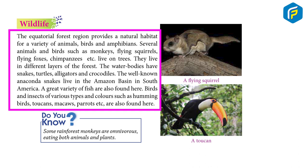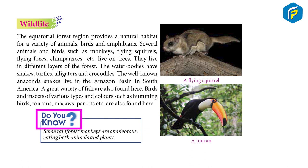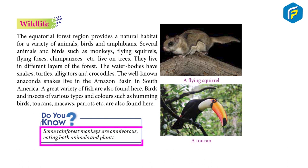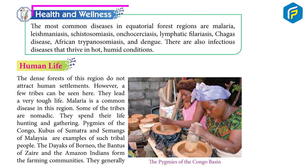Birds and insects of various types and colors such as hummingbirds, macaws, parrots, etc. are also found here. Do you know? Some rainforest monkeys are omnivores, eating both animals and plants.